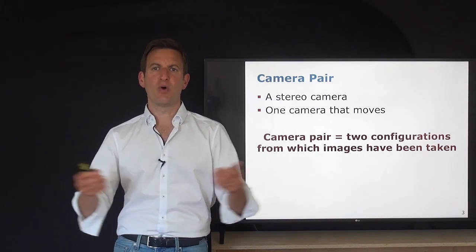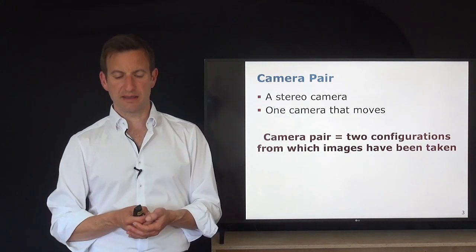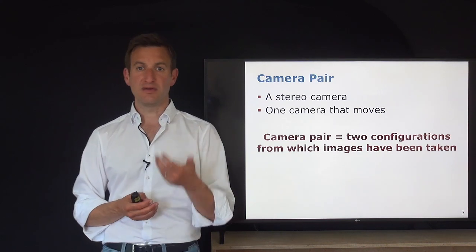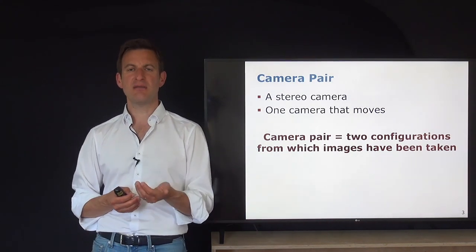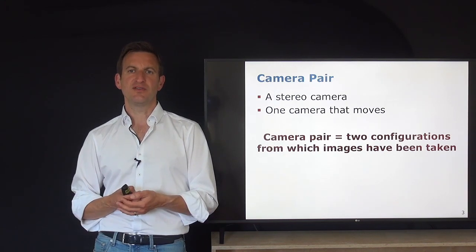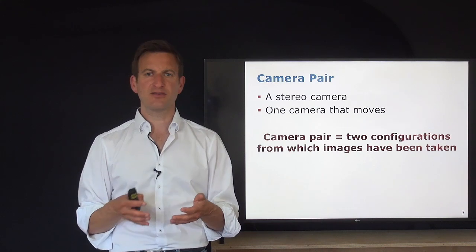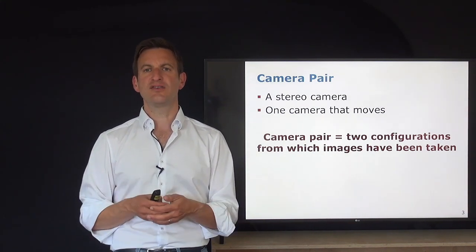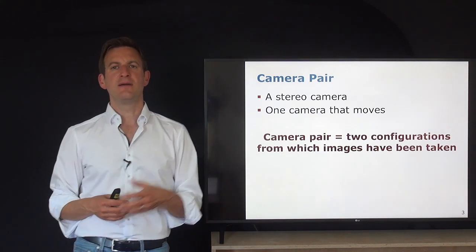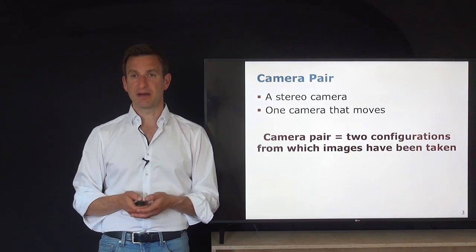For example, what is the relative orientation of the two cameras when they were taking their images? In today's lecture, we look into the relative orientation, and then into two essential matrices: the fundamental matrix and the essential matrix. One is for the uncalibrated camera and one for the calibrated camera, both describing the relative orientation between cameras.